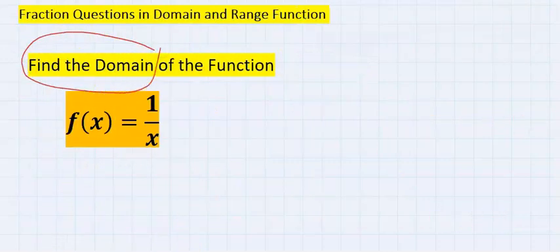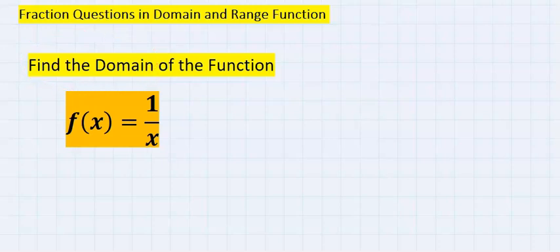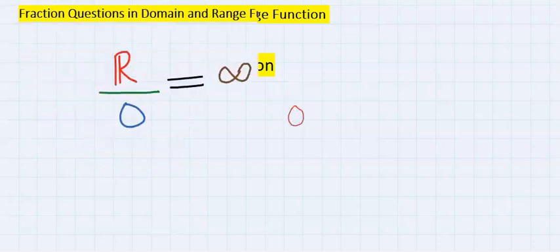Find the domain simply means write a mathematical expression to make this function continue. The only number that will stop this function from existing or terminate is 0. Why? 0 is not allowed at the denominator of any function.